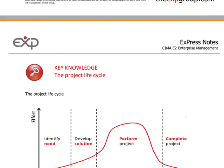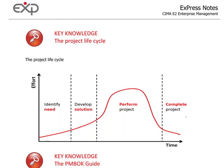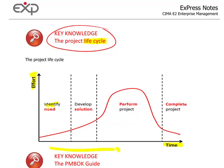If we go down to page 17 of our notes, here we have what is known as a project life cycle — the life cycle of a project. On the diagram here, we have time on this axis and effort there. As time develops, we start with identifying the need. So the first stage of the project life cycle is identifying that there's a need. The amount of effort is relatively low.